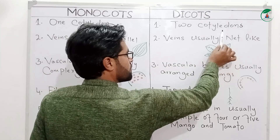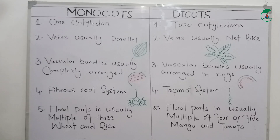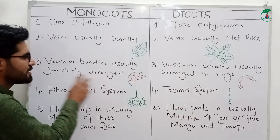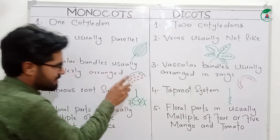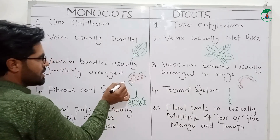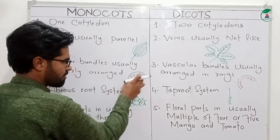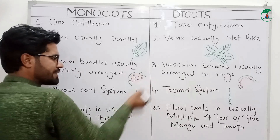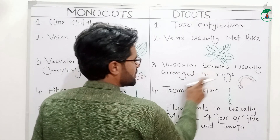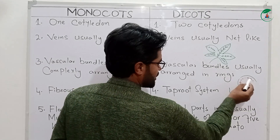The vascular bundles are usually complex. When you see the vascular bundles, they are complexly arranged. The vascular bundles are usually arranged in rings, but in monocots the vascular bundles are scattered.